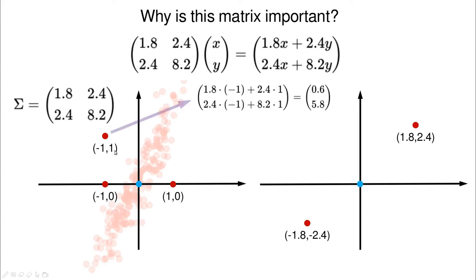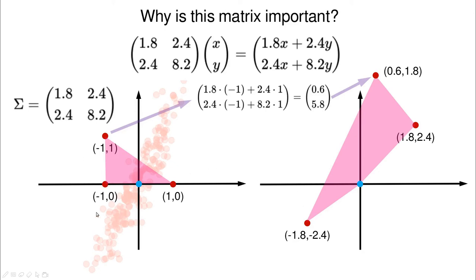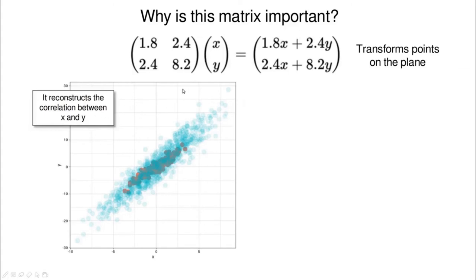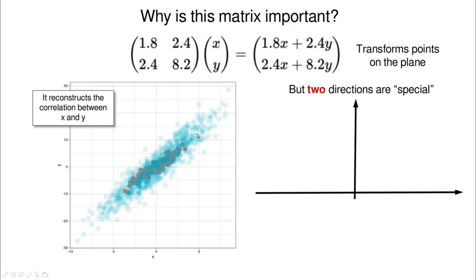Let's try a more exciting one: (−1, 1). We do the same math — first coefficient times −1, second times 2.4, and so on, and we end up at a new location. You can see we started with this polygon and there is a stress in some direction; one point has moved into a direction that aligns with another point. If you repeat this with random blue points, you can see that this transformation reconstructs the correlation between X and Y, reproducing the relationship between the variables.